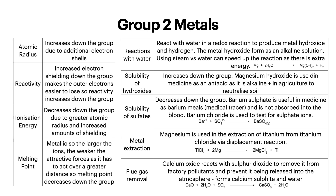The solubility of sulfate decreases down the group. Barium sulfate is useful in medicine as barium meals, which are a medical tracer, and it's not absorbed into the blood — because of its lack of solubility it doesn't get absorbed into the blood, which can be very toxic if that were to happen. Barium chloride is also used to test for sulfate ions. Magnesium is used in the extraction of titanium from titanium chloride via a displacement reaction. Calcium oxide reacts with sulfur dioxide to remove it from factory pollutants and prevent it being released into the atmosphere, forming calcium sulfite and water.